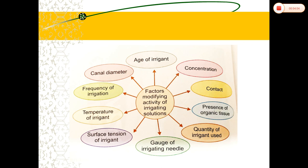We move on to the factors that modify the activity of an irrigating solution. The first factor is concentration. Many studies have shown that tissue-dissolving ability of sodium hypochlorite increases linearly with concentration, but it is preferred to use it at a lower concentration because of its cytotoxic effect. Hypochlorite is highly cytotoxic to soft tissues, periodontal tissues, and periapical tissues.